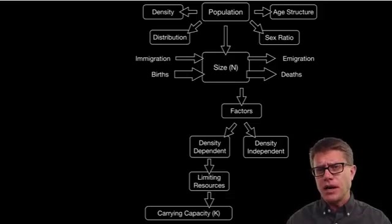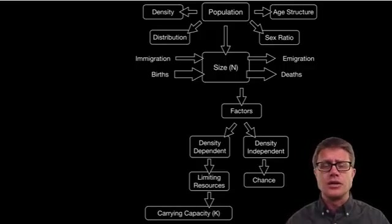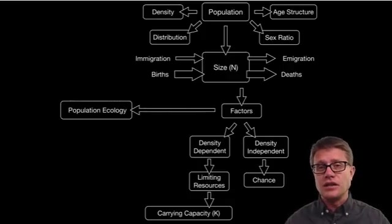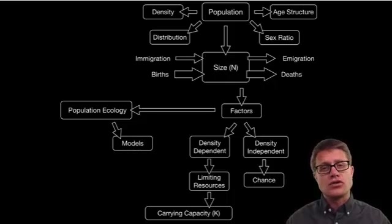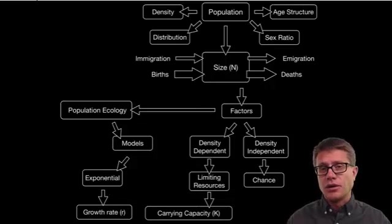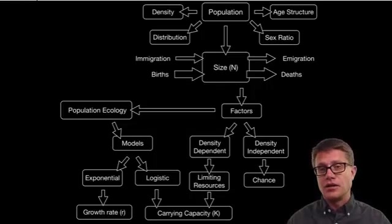We also have density independent factors that are related to chance. A flood or fire could be examples that limit the size of the population. In population ecology we're studying these factors. Scientists come up with models that help describe what's going on in a population. A famous model is the exponential growth model, looking at this growth rate and how it's increasing the population over time. Then we have a logistic model showing exponential growth but eventually reaching a carrying capacity.